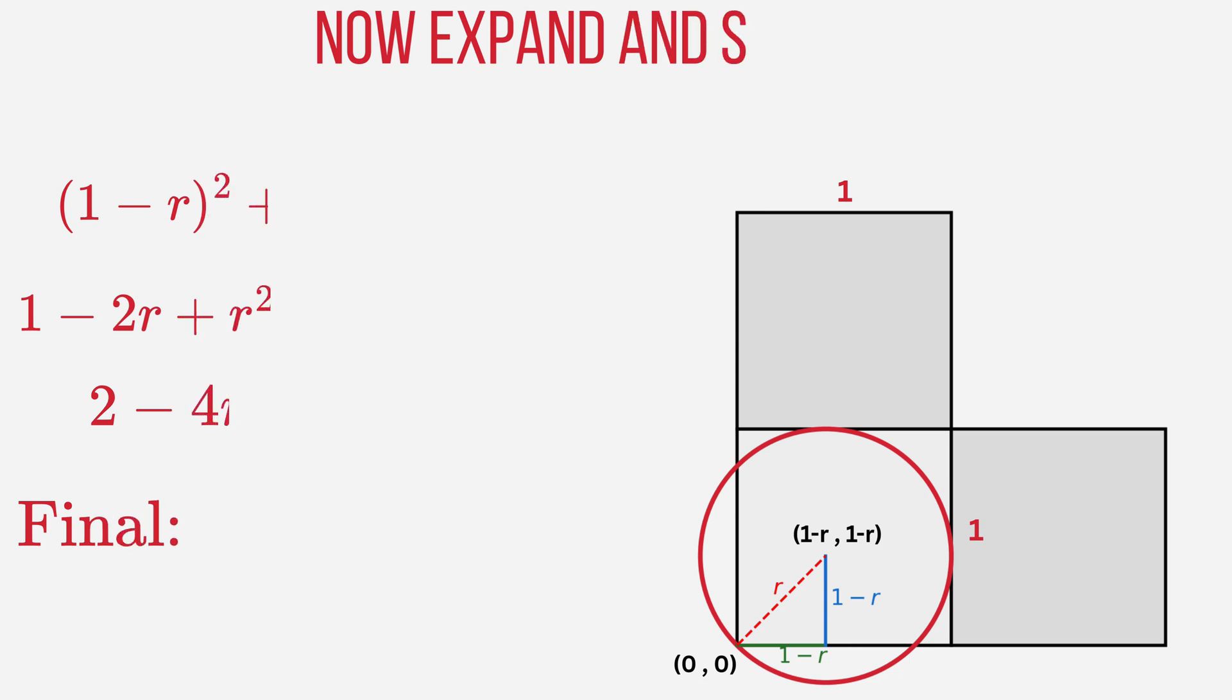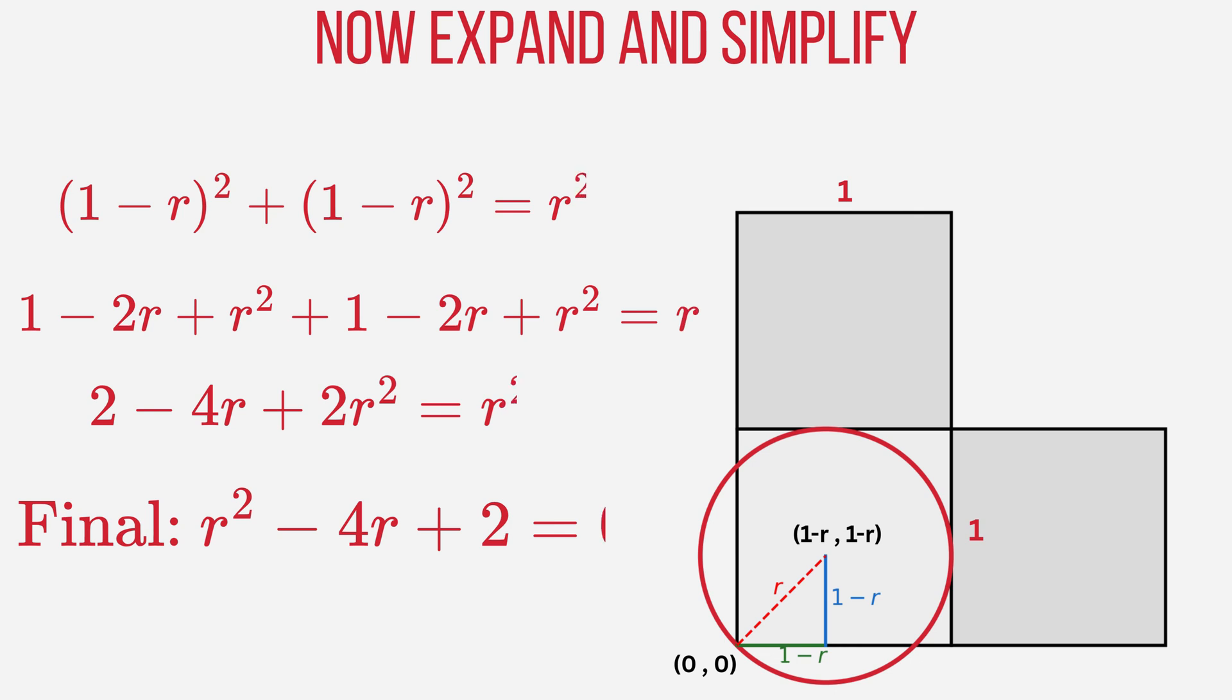Now let's expand each of the squared terms using algebra. The left side gives us two copies of 1 minus 2R plus R². Adding them together we get 2 minus 4R plus 2R². This equals the right side which is just R². Now we subtract R² from both sides to simplify the equation.